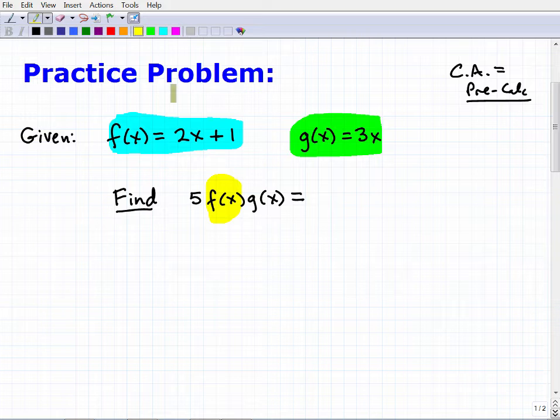We're going to find this. What does this mean? This is f(x) times g(x). This is what this notation means. We're going to take 5. When we have the 5 in front of f(x) and g(x), this means 5 being multiplied by f(x) times g(x). So let's write this out. This is going to be 5. Now the f(x) function is 2x + 1, and then we have the g(x) function, which is 3x.